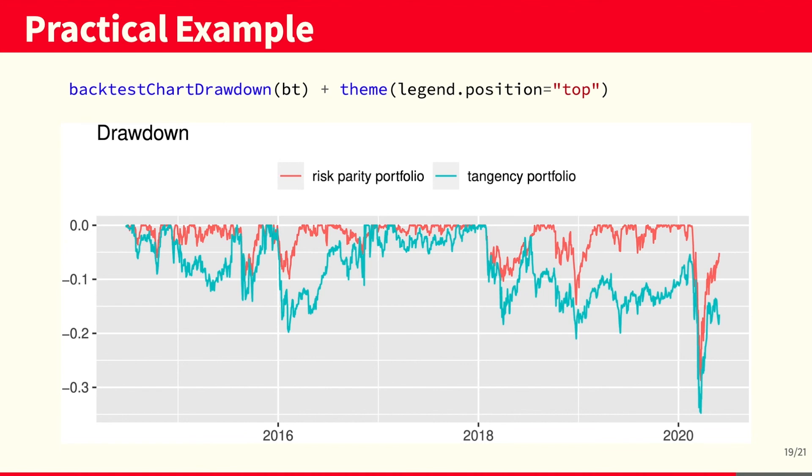Consistently, the drawdown chart also shows that the risk parity portfolio outperforms the tangency portfolio.